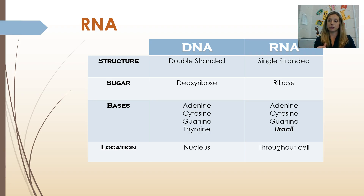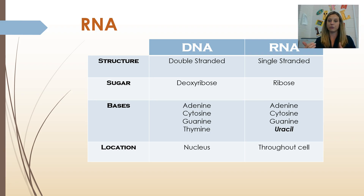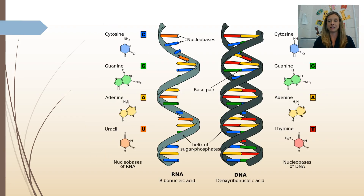RNA is single-stranded. Its sugar is ribose — that's where the R in RNA comes from. It has four nitrogen bases; three of them are the same as DNA: adenine, cytosine, and guanine. But instead of thymine, we have a base called uracil. It's still a pyrimidine, just like thymine is, but it's slightly different. So, uracil instead of thymine. Because RNA is single-stranded, it's actually small enough to leave the nucleus through the nuclear membrane and travels all throughout the cell.